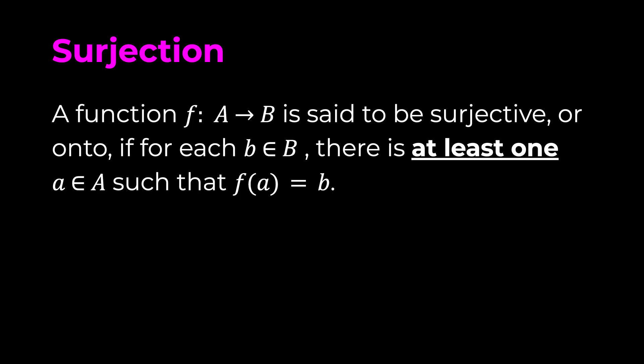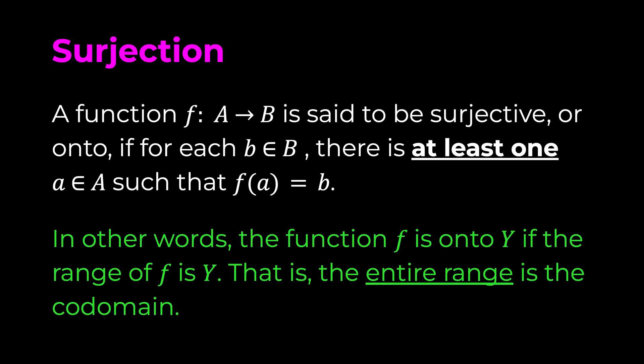Now let's take a look at surjection. A function f such that A is mapped to B is said to be surjective or onto if for each b in B there is at least one a in A such that f(a) equals b. In other words, the function f is onto B if the range of f is B — that is, the entire range is the codomain.